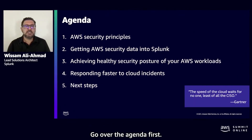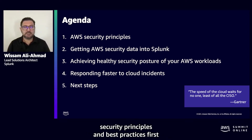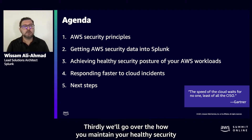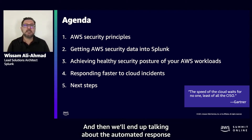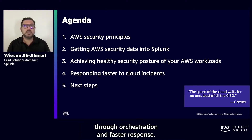Let me go over the agenda first. We're going to go over the AWS security principles and best practices first. Then we'll talk about how you get the security data from the security services in AWS into Splunk. Thirdly, we'll go over how you maintain your healthy security posture with detections and investigation. And then we'll end up talking about automated response to these threats through faster automation, orchestration, and faster response.